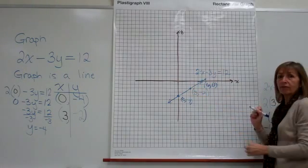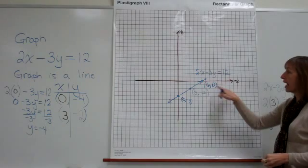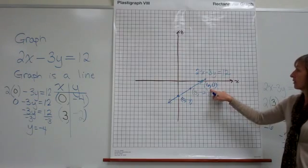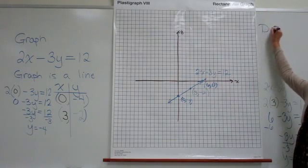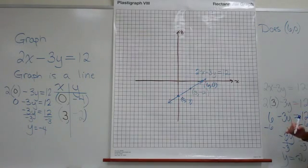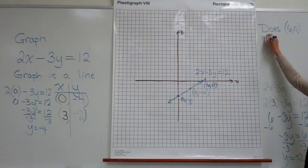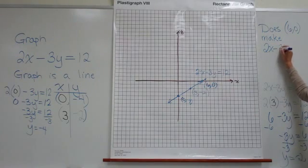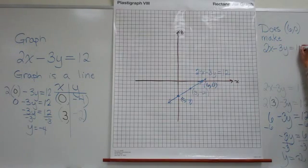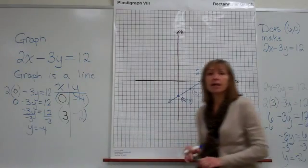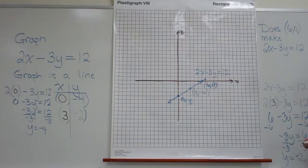It shows that my graph goes through there. So that means that that ordered pair should make our equation that we graphed true. So let's see. Does the ordered pair 6 comma 0 make the equation 2x minus 3y equal 12 true? Well, to test that, what you do is, because you're checking a full ordered pair to see if it makes the equation true, we're going to take out the x and put in the x-coordinate of the ordered pair we're checking.